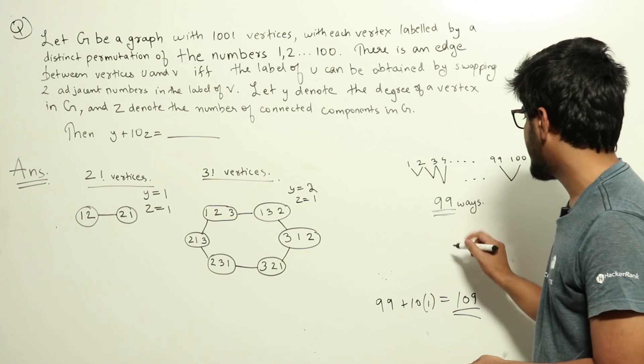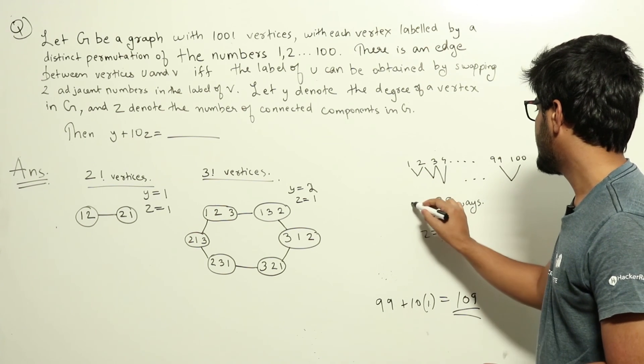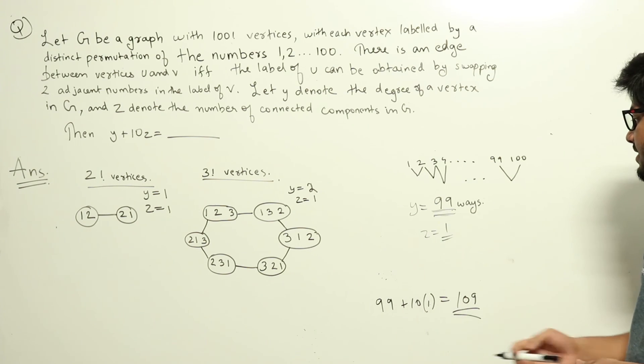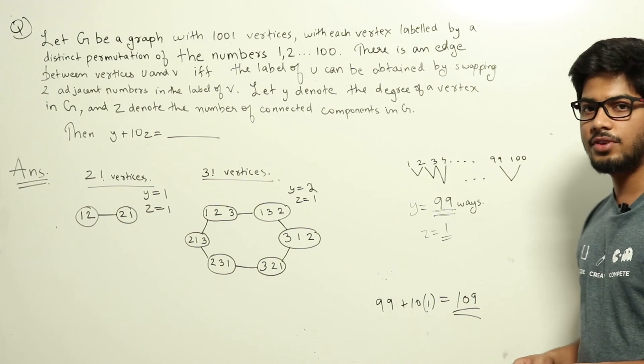So the number of connected components here will be 1. So z will be 1. y will be 99. So the answer is y plus 10z that is 99 plus 10 which is 109.